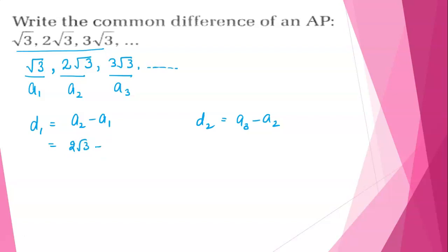A2 is 2 root 3 minus root 3. Now take root 3 as common so we will get 2 minus 1 which is equal to root 3 times 1 is equal to root 3.